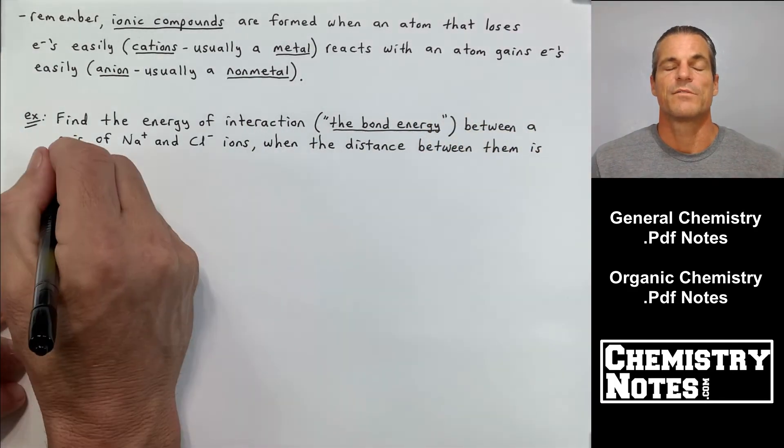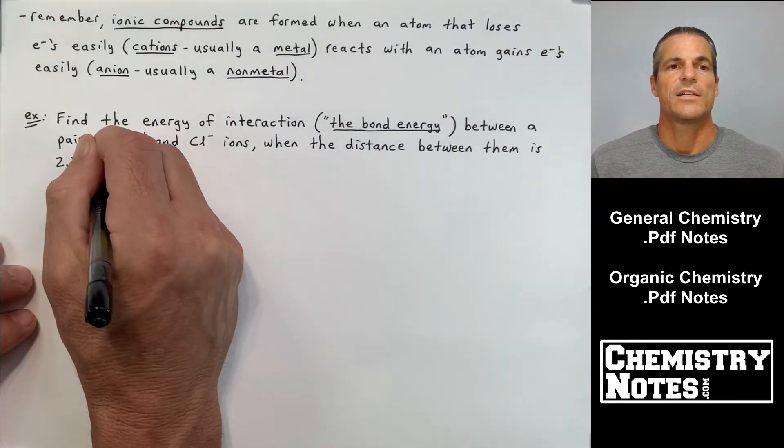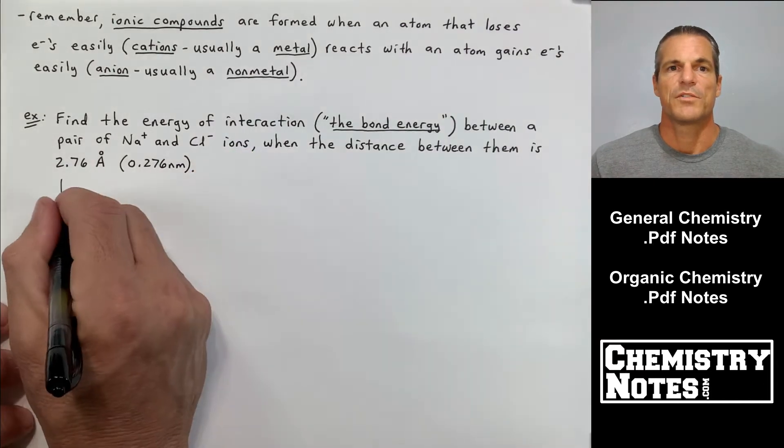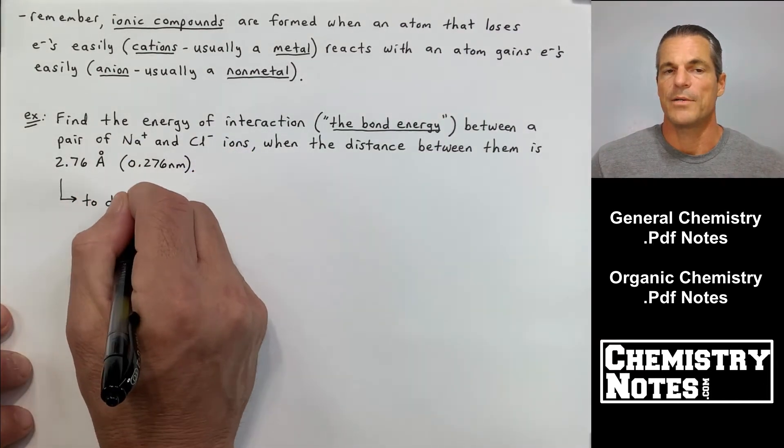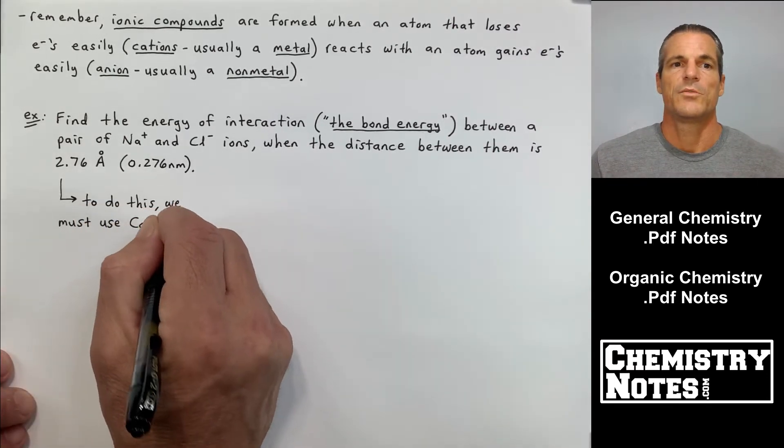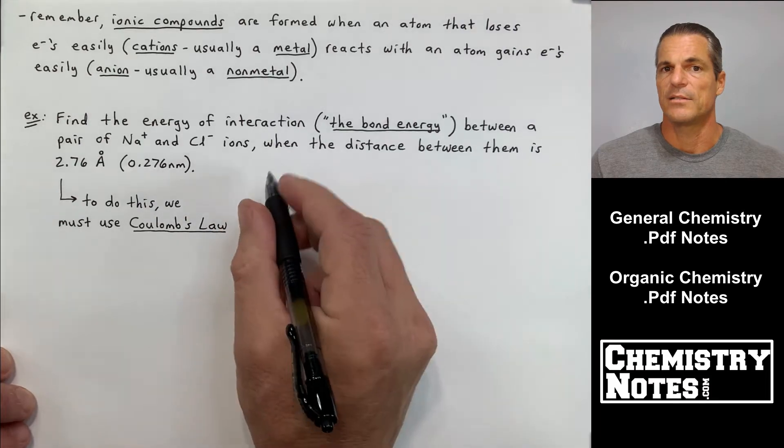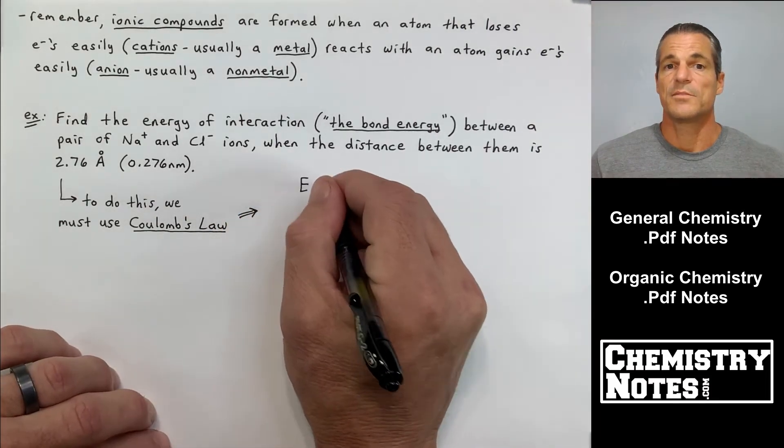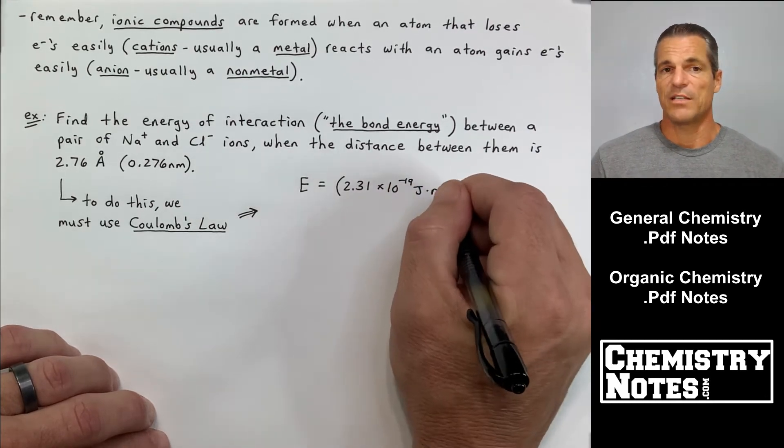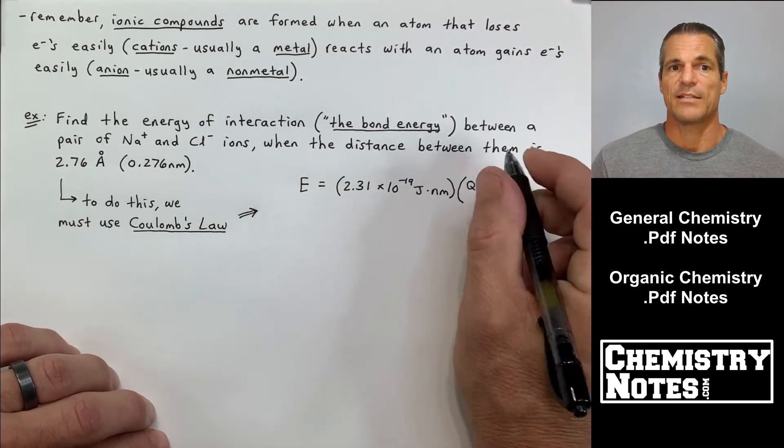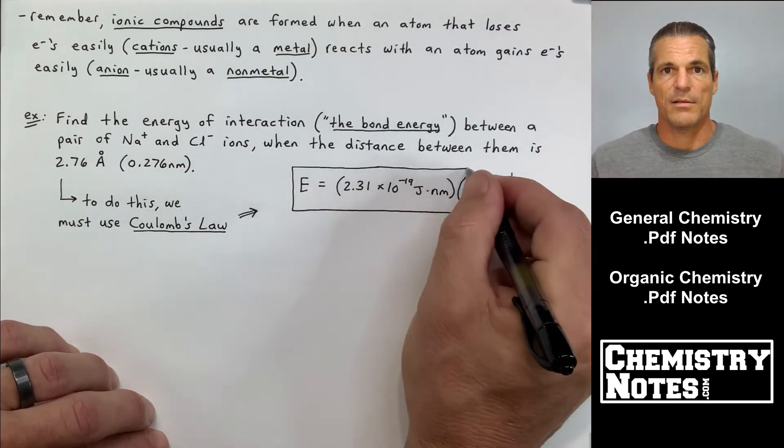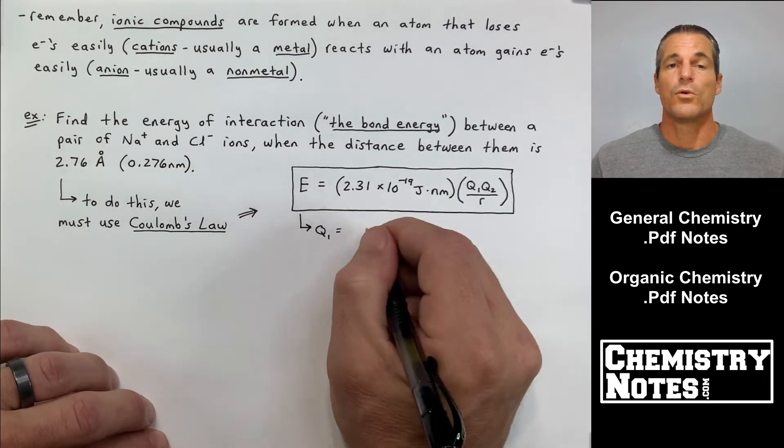Let's take a look at an example. This example wants us to find the energy of interaction, more commonly referred to as the bond energy, between a pair of Na+ and Cl- ions when the distance between them is 2.76 angstroms, which equals 0.276 nanometers.